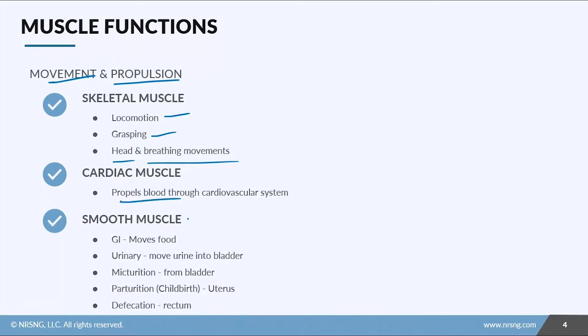Cardiac muscle propels blood through the cardiovascular system. That's its job. Smooth muscle propels food and different types of fluids. In the GI tract, we're going to move food down the digestive tract. In the urinary system, we're talking about moving urine into the bladder from the kidneys.